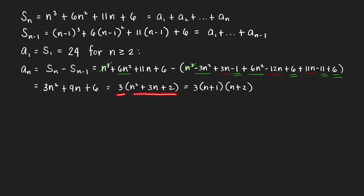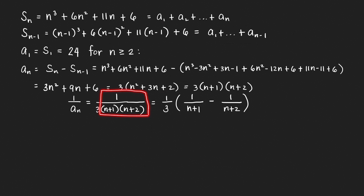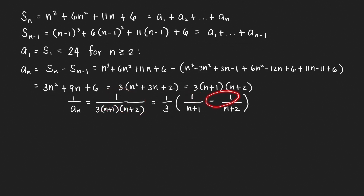This factors to 3 times (n+1)(n+2). So the reciprocal of a sub n is 1 over 3(n+1)(n+2), and we factor out one-third. Using partial fraction decomposition with the cover-up technique: cover the (n+1) factor and plug in n equals negative 1 to get 1; cover the (n+2) factor and plug in n equals negative 2 to get 1 over negative 1, which is negative 1.